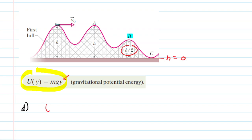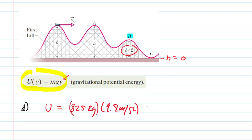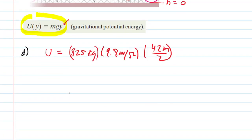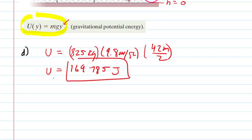For part D, the gravitational potential energy equals the given mass of 825 kg, multiplied by G, multiplied by H divided by 2. H was 42 meters. When we compute this, the answer is again 169,785 joules. That is the answer to part D.